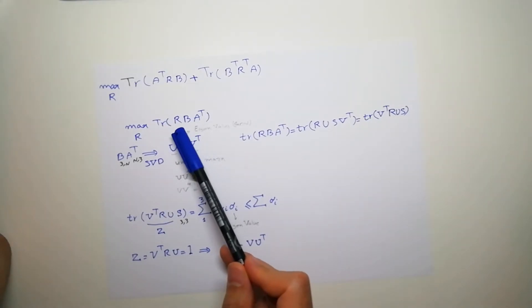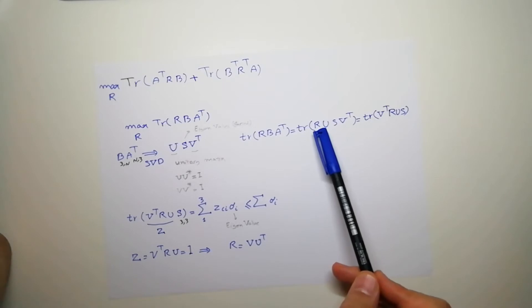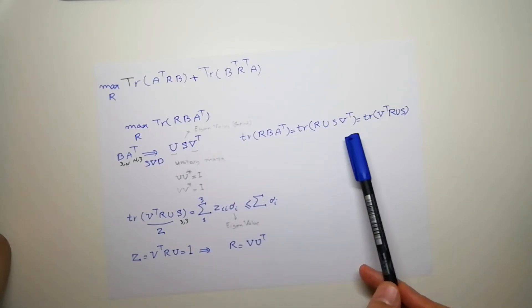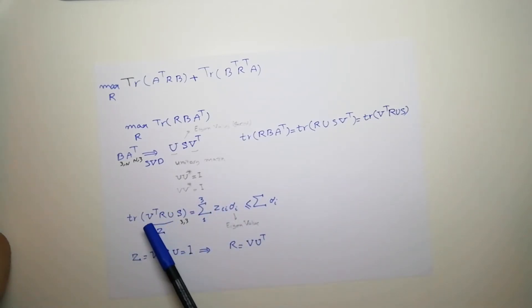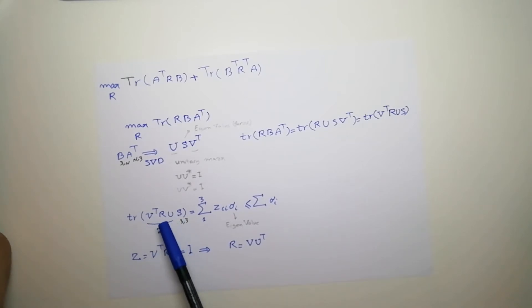So trace of R B A T is equal to trace of replacement by the SVD, which is U S V transpose. And again, we can use the circulation property, this V T could turn here. So now we have a trace of V T R U S. And S is a matrix with eigenvalue on the main diagonal and zero everywhere. So because these are unitary matrices, R V T and U, the maximum value for them going to be when the product of this multiplication is identity. That's going to be the maximum value for them. So the maximum value for R that maximizes this is when this phrase is 1.